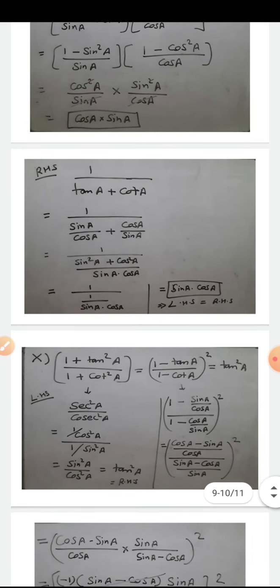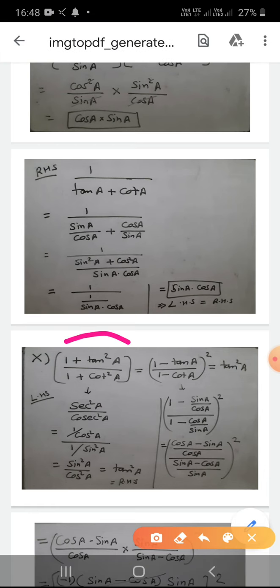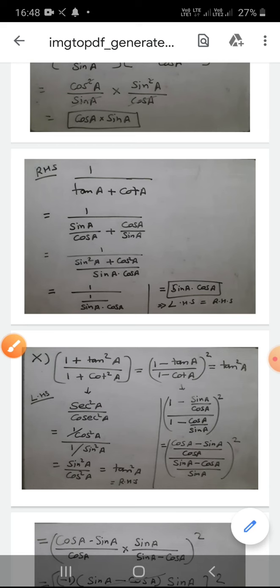Part 10: prove (1 + tan²A)/(1 + cot²A) = [(1 - tan A)/(1 - cot A)]² = tan²A. There are three terms to equate in steps. For the first part: 1 + tan²A = sec²A by identity. For 1 + cot²A = cosec²A. So the expression becomes sec²A/cosec²A = (1/cos²A)/(1/sin²A) = sin²A/cos²A = tan²A. First part proved.